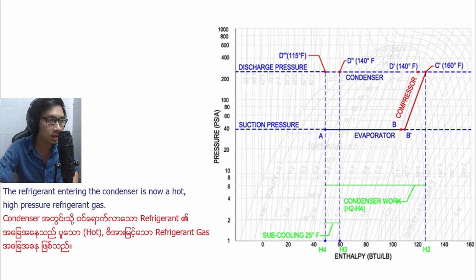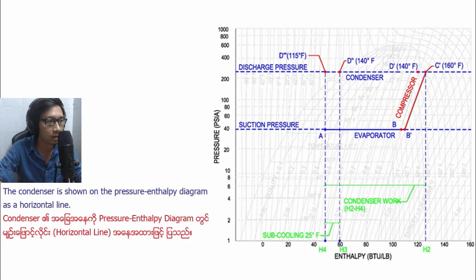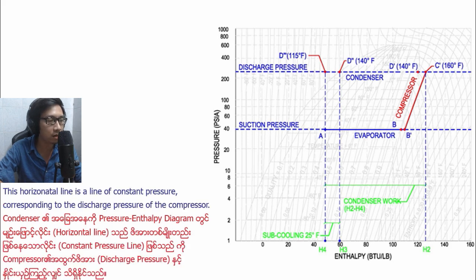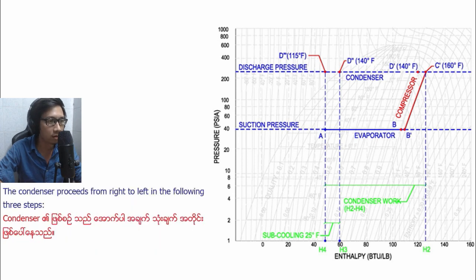The refrigerant in the condenser is now a hot high-pressure refrigerant gas. The condenser is shown on the pressure-enthalpy diagram as a horizontal line. This horizontal line is a line of constant pressure corresponding to the discharge pressure of the compressor. The condenser process from right to left in the following three steps.